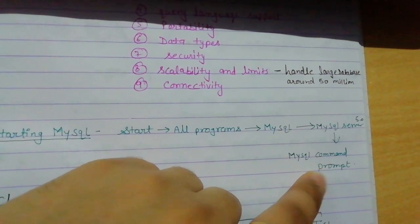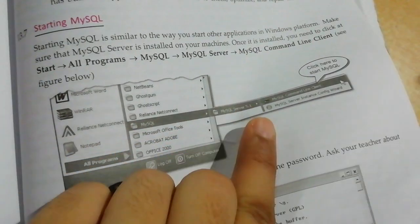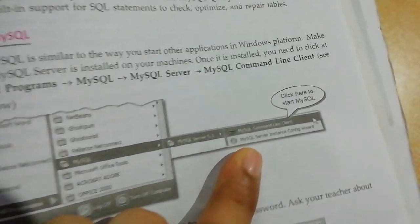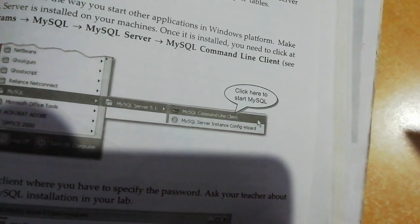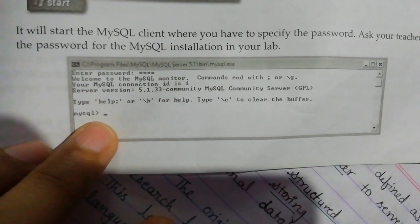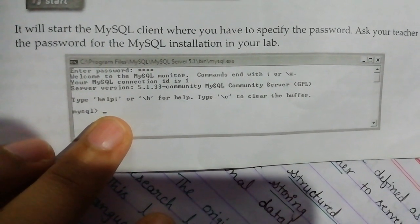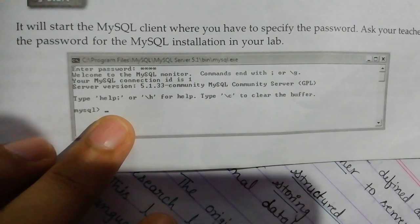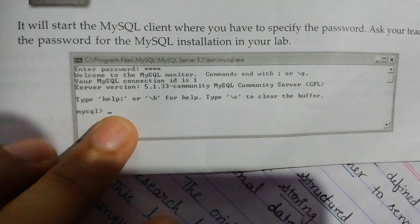We will open it in the command prompt. Click on the Start button, then click on All Programs, then MySQL, then MySQL Server 5.0, and we will open it in the command prompt. When we click on the command prompt, our MySQL will open. From the MySQL command prompt, we can perform operations like manipulation, editing, creating, selecting, deleting, updating, etc.